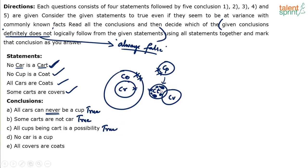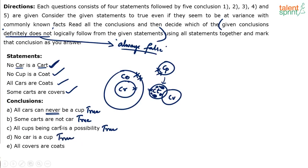Next: 'No car is a cup.' True. No car can be a cup because cars are all surrounded by coats, and coats can never be cups. If coats cannot be cups, cars also cannot be cups. So 'no car is a cup' is also true.